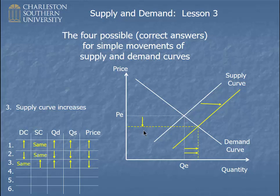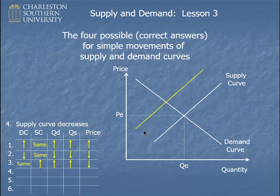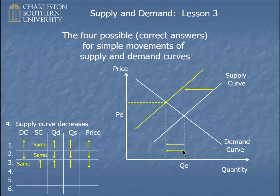The last one is the supply curve decrease — the supply curve shifts back to the left. We have our new equilibrium established here. The supply curve shifts back to the left, demand curve stays the same, quantity demanded and quantity supplied both decrease, and in this case the price increased. Filling in the chart one last time, it would look like that.